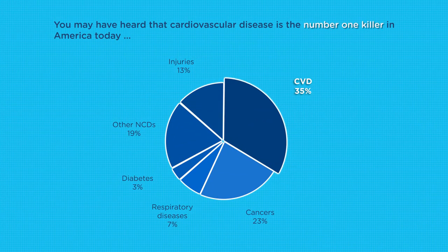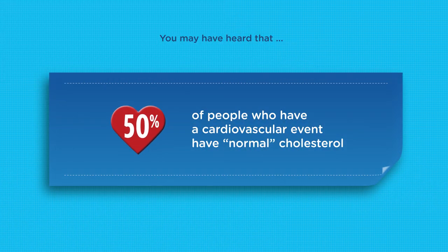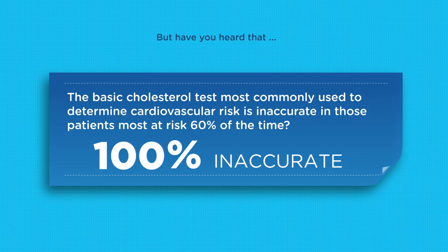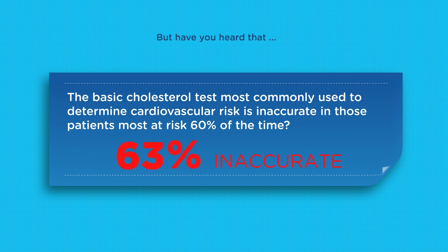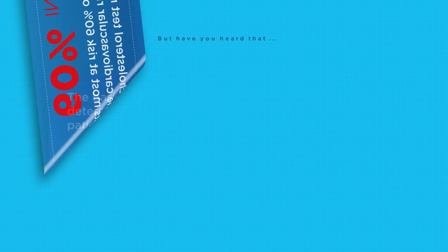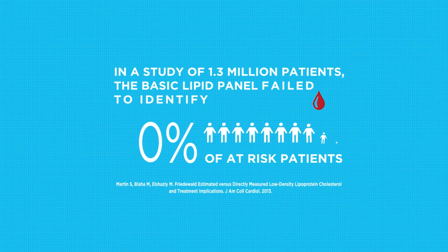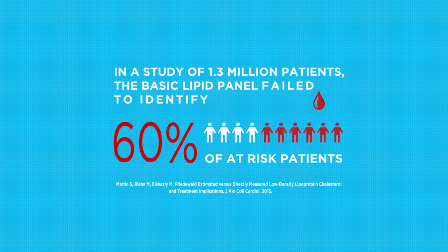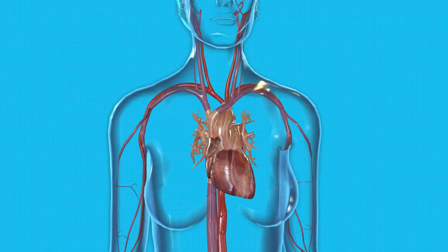You may have heard that cardiovascular disease is the number one killer in America today. You may have even heard that 50% of people who have a cardiovascular event have normal cholesterol. But have you heard that the basic cholesterol test most commonly used to determine cardiovascular risk is inaccurate in those patients most at risk 60% of the time? A recent Johns Hopkins study revealed that the limitations of the basic lipid panel consistently underestimate LDL levels in patients. Let's take a look at how that happens.